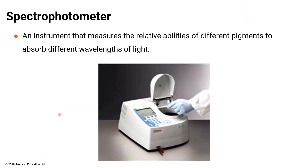An instrument called a spectrophotometer is used to measure the relative abilities of different pigments to absorb different wavelengths of light.